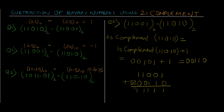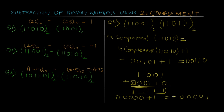Since we did not get any extra carry, this means the answer is negative. The answer is actually going to be in 2's complement form, so we have to again take 2's complement of this value to get our final answer. Taking 2's complement of 11111: the 1's complement is 00000 plus 1 gives us 00001, and this is going to be a negative value. Always remember — when you get a carry the answer is positive and you discard the carry; when you get no carry, take 2's complement of the result to get the final negative answer.